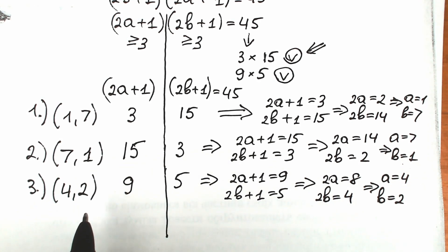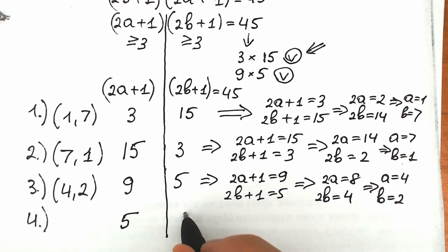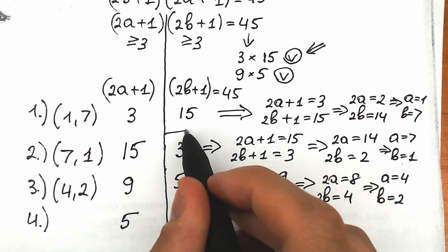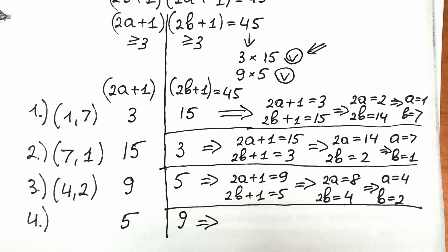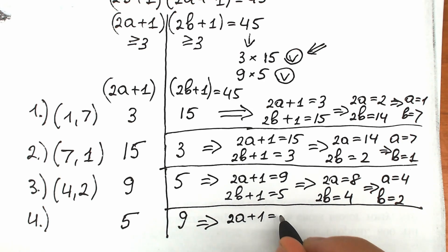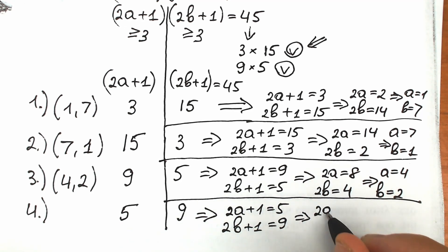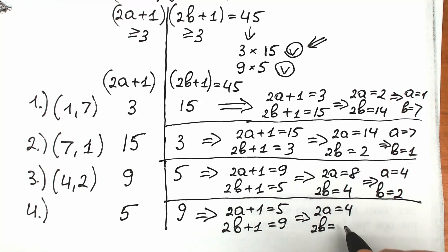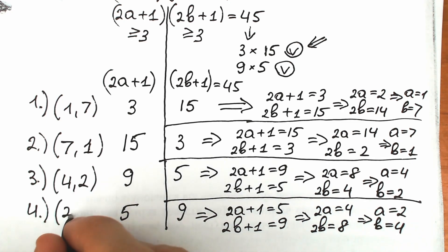The fourth pair comes from swapping: 2a plus 1 equal to 5 and 2b plus 1 equal to 9. This gives 2a equals 4, so a equals 2, and 2b equals 8, so b equals 4. Our fourth pair of solutions is a equals 2 and b equals 4.